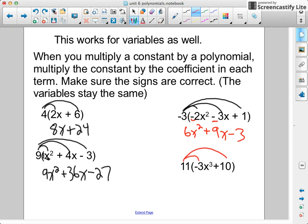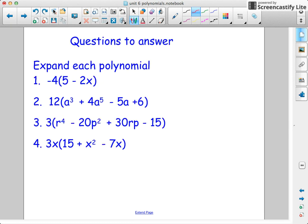And finally, this one would be negative 33x cubed plus 110 when we multiply. The variables do not change when you're just multiplying by a constant.